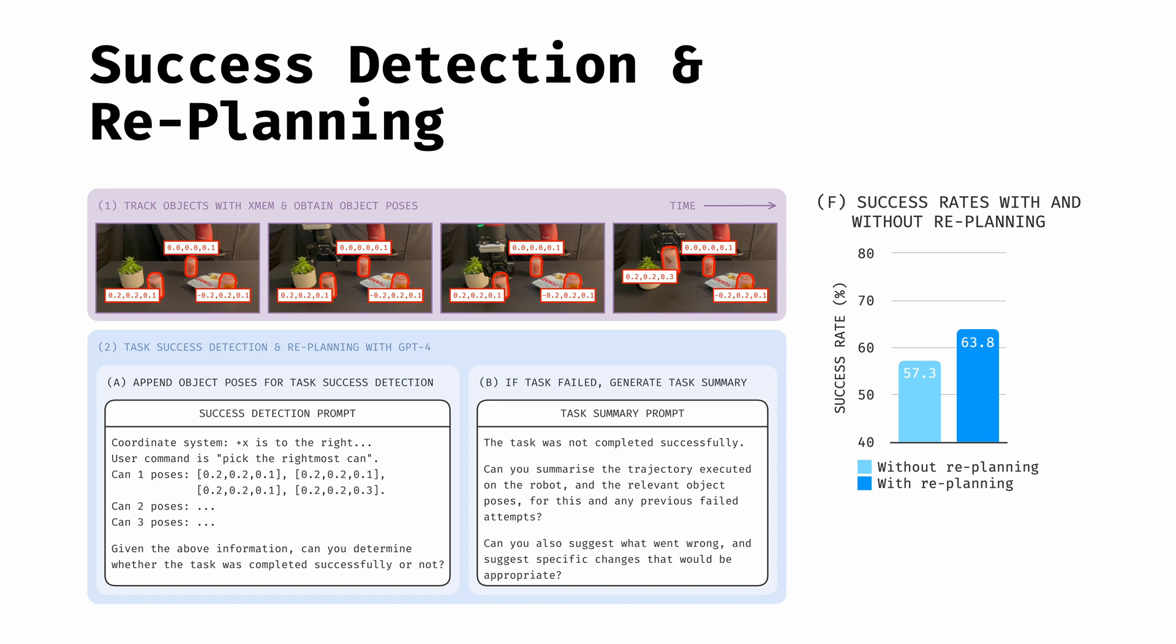This leads to a small improvement in the overall performance, with a task completion success rate of 63.8% when including re-planned trajectories, compared to 57.3% without re-planning.